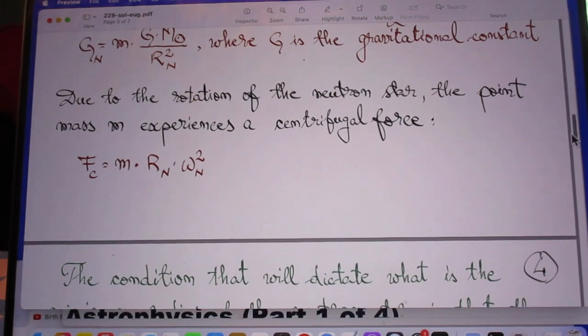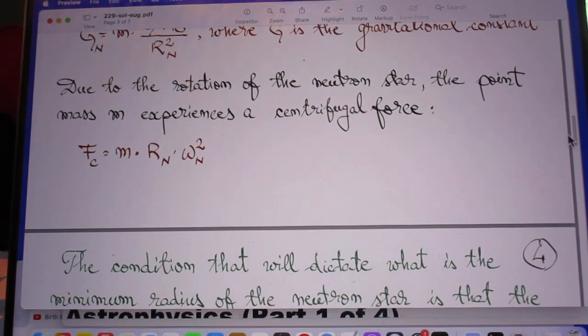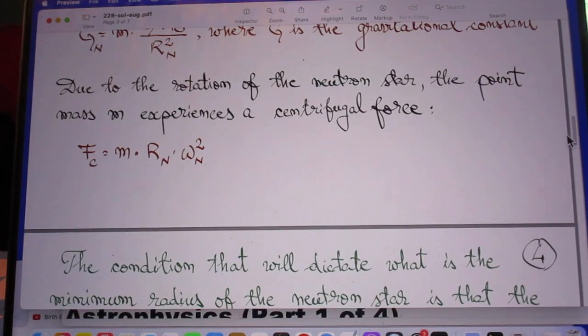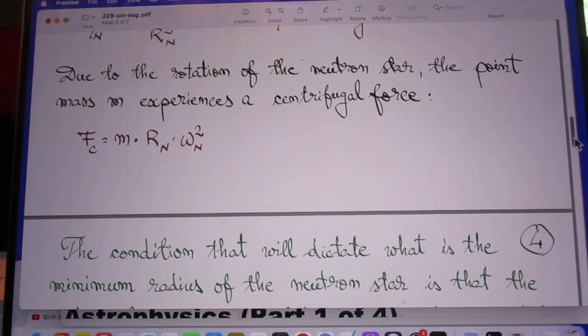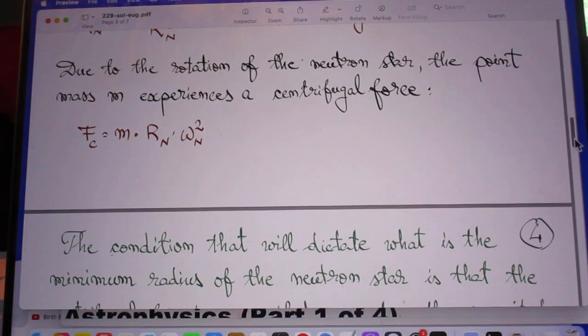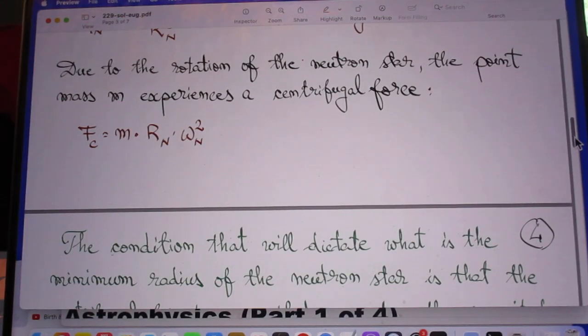Due to the rotation of the neutron star, the point mass M experiences centrifugal force. He uses the word centrifugal force, which is correct. A rotating frame of reference is not an inertial frame of reference. Therefore, in rotating frames of reference, we introduce what we call a fictitious force. And the fictitious force in a way gets us back to F equals M A of Newton. And if you are in a rotating frame, that centrifugal force is outwards.